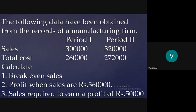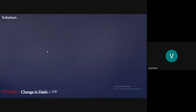To calculate the breakeven sales, the formula is: Breakeven Sales = Fixed Cost / PV Ratio. Since we don't know the fixed cost or the PV ratio, we will first calculate the Profit Volume (PV) ratio. Normally, PV ratio = Contribution / Sales × 100, but since variable cost is not given, we will use a different formula to calculate the profit volume ratio.